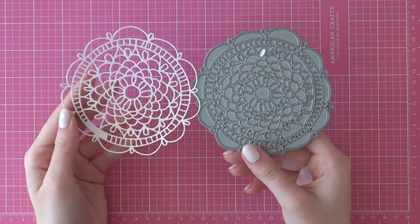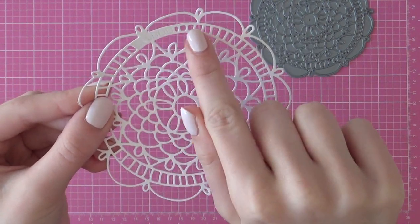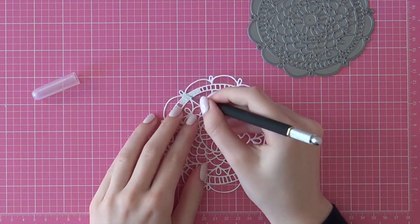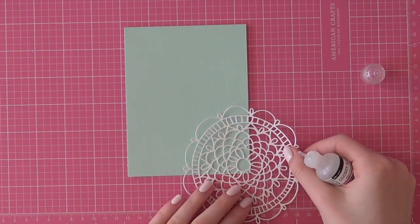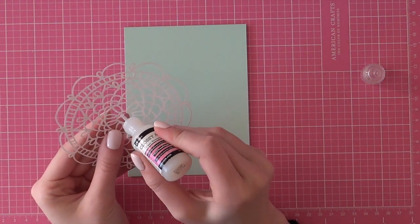I am starting out with the doily circle die from Waffle Flower and I already die cut that doily out of some Neenah white cardstock, but some of the little pieces of that die were still attached to it, so I had to use my exacto knife to cut out those little pieces.